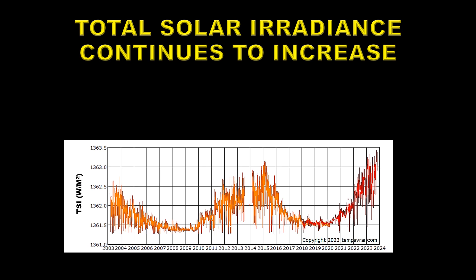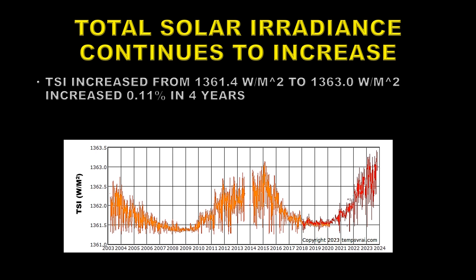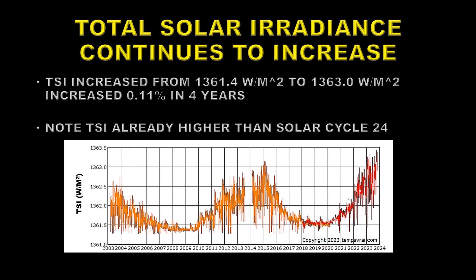An important quantity to understand about the sun is the total solar radiance — that's the amount of energy from the sun reaching the Earth. It has risen from 1361.4 watts per meter squared to 1363.0 watts per meter squared over the last four years. That's a 0.11% increase, which is about the range you get for a solar cycle normally. You'll notice it is already much higher on average than Solar Cycle 24.